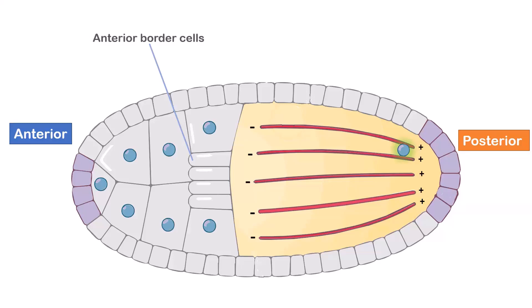Bicoid mRNA binds to Dynein, a minus-directed motor protein associated with the non-growing end of microtubules. Dynein moves the bicoid mRNA to the anterior end of the egg.